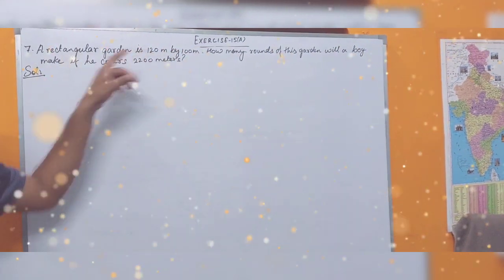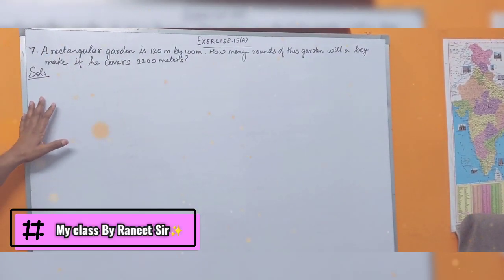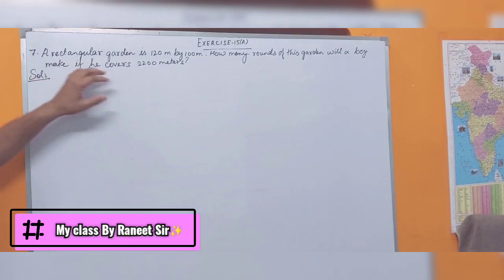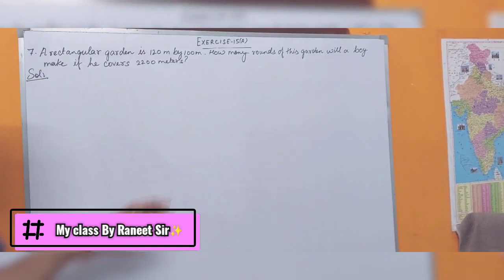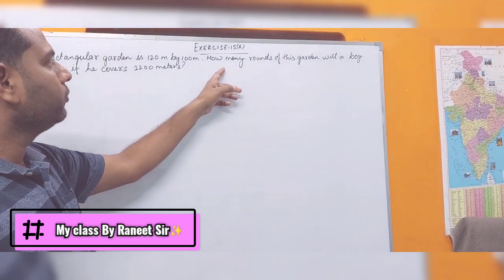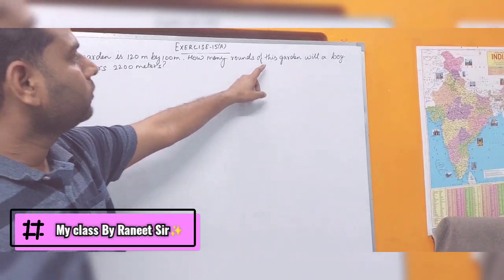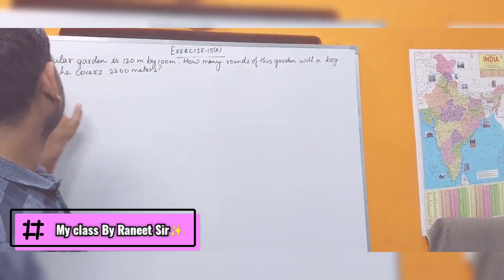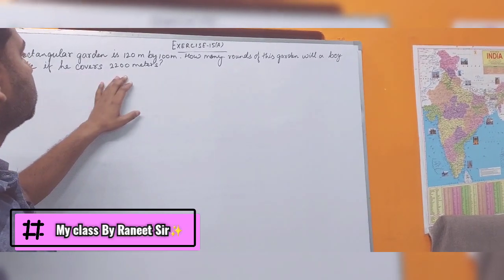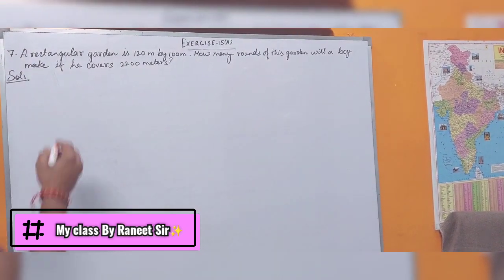Okay, today we are going to solve the next question. A rectangular garden is 120 meters by 100 meters. How many rounds of this garden will a boy make if he covers 2200 meters?